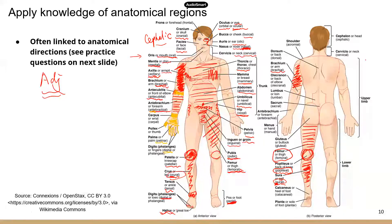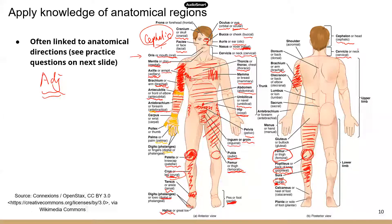Now transitioning to the posterior view. For the head, whether looking at the front or back, the entire head is still referred to as cephalic or cranial. For the neck, front and back are both cervical. I also forgot to mention the forehead — that's known as the frontal area. The shoulder point is known as acromial.